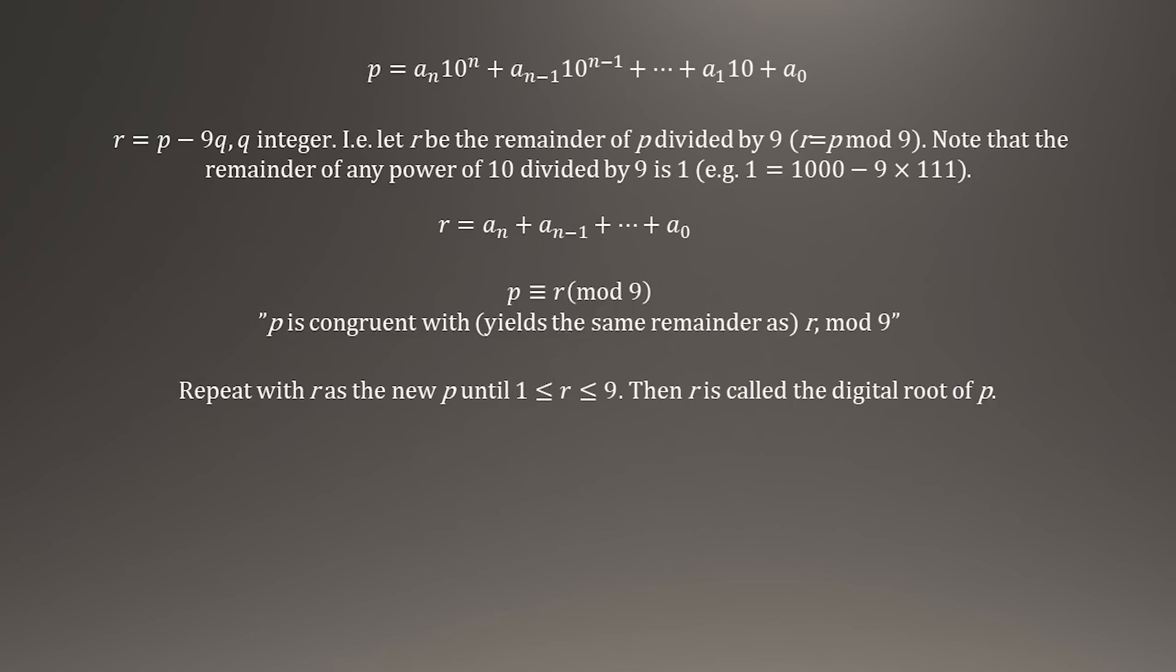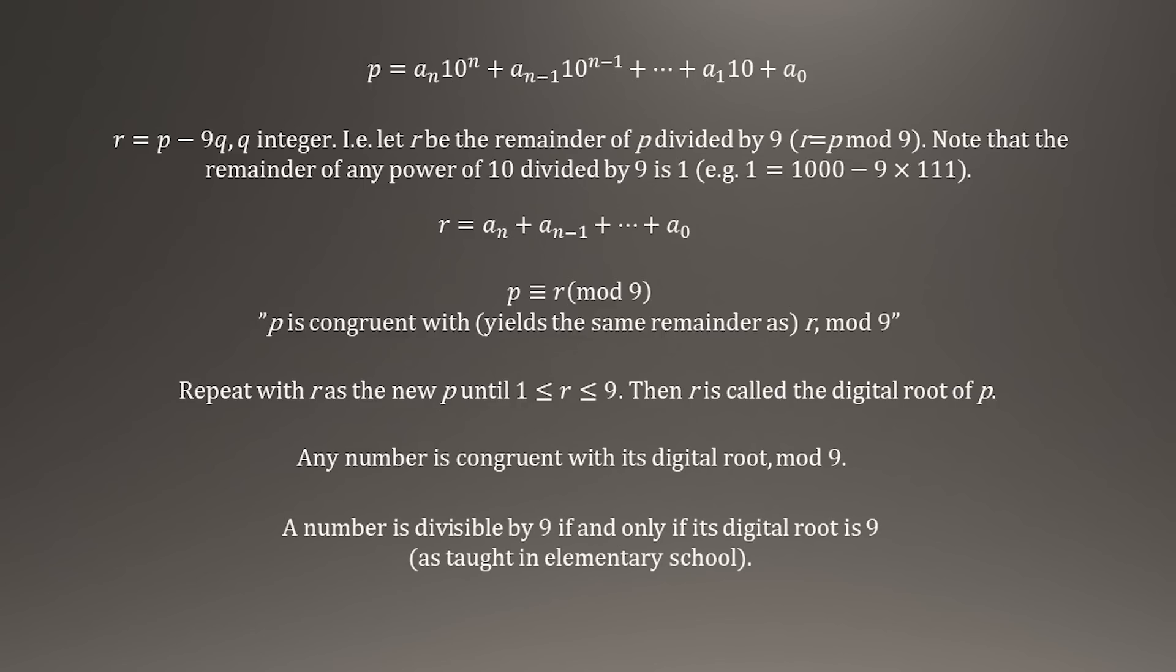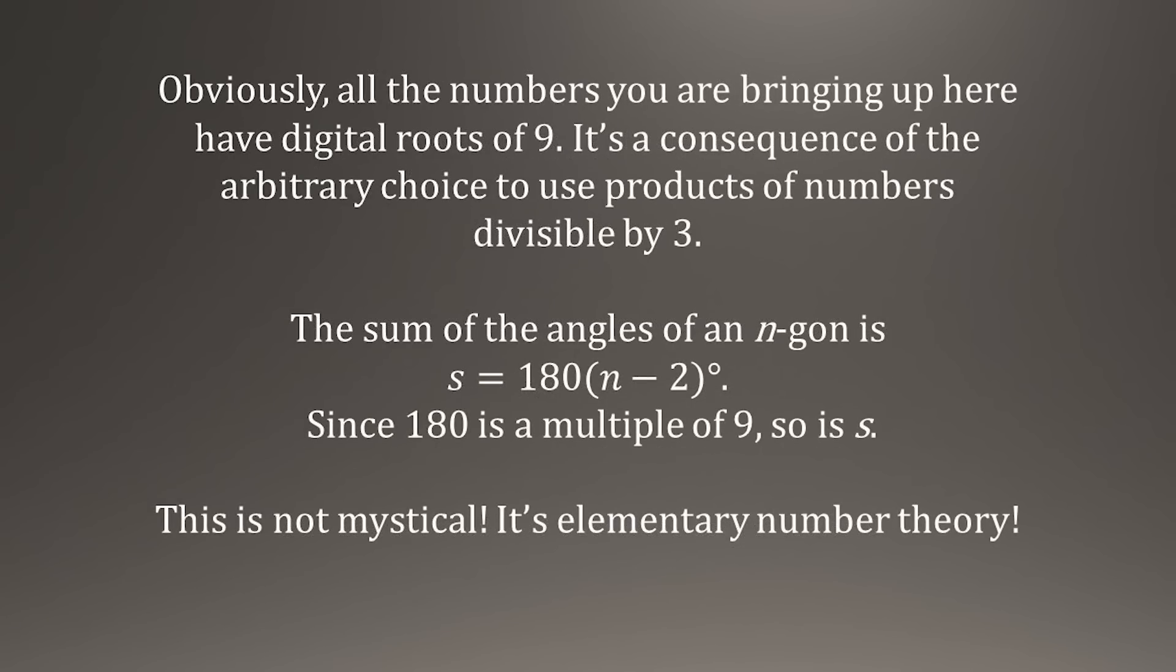We say that p and r are congruent mod 9. That is, both yield the same remainder under division by 9. p yields r, and r obviously yields itself. And this doesn't mean that r is the smallest remainder we can get. We can keep going, repeating the process with r as our new p, until we get an r that is a single digit number between 1 and 9, the original p's digital root. This is exactly what you've done. Add the digits together. If you don't get a single digit sum, repeat until you do. Notice that if the digital root of p happens to be 9, we can conclude that p is evenly divisible by 9, since the remainder when 9 is divided by 9 is 0. What we've shown is that any number is congruent with its digital root, mod 9. That means that a number is evenly divisible by 9, if and only if that number has a digital root of 9. A trick to check for divisibility by 9 that's taught in elementary school, even though it's never explained there.